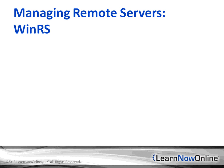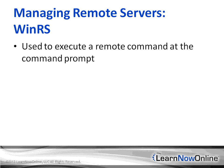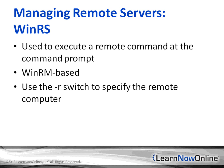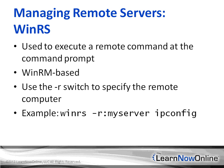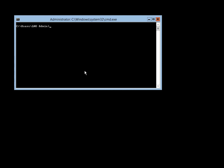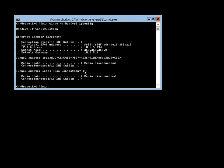Another way to manage remote servers is with the WinRS command. WinRS is used to execute a command at a remote command prompt and is based on WinRM. Use the -R switch to specify the remote computer name or IP address — for example: WinRS -r:myserver ipconfig. In a server core installation, let's use WinRS to find the IP address of WinServerB: WinRS -r:WinServerB ipconfig. You get the same results as if you were logged on locally on Server B.